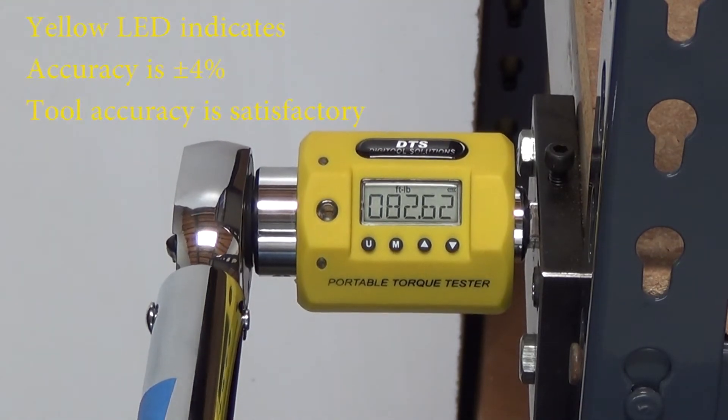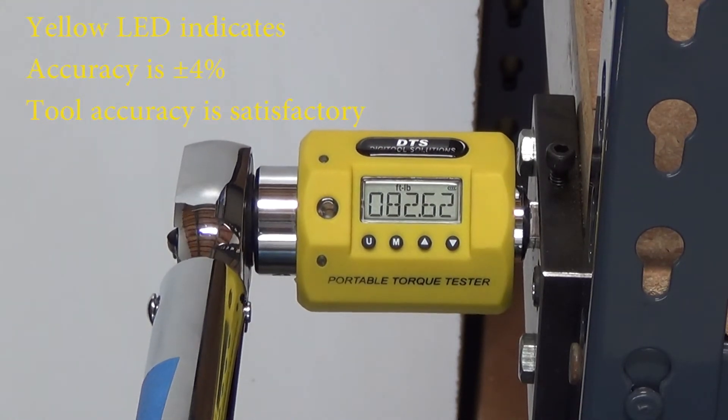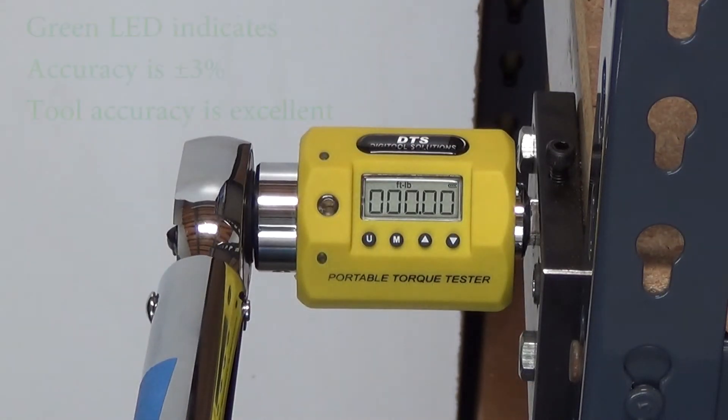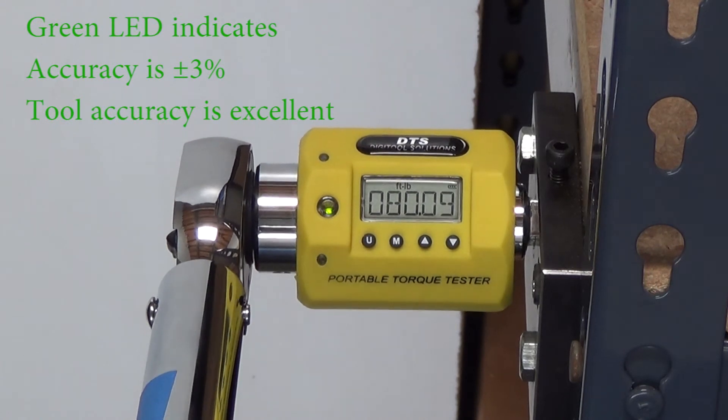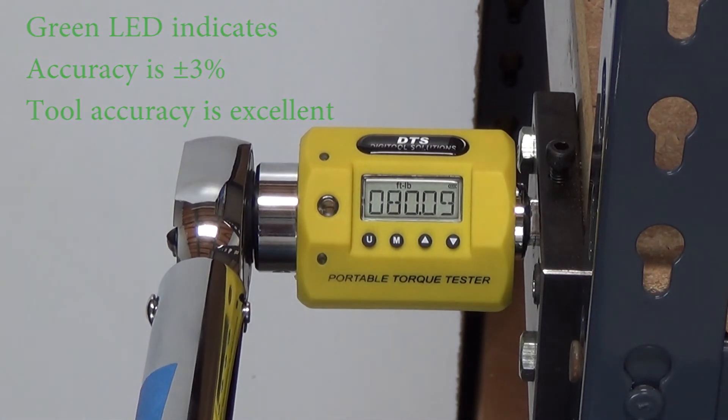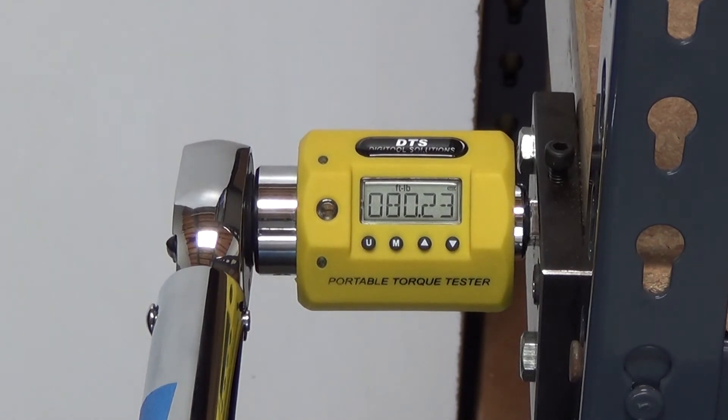The yellow LED indicates that you are plus or minus 4%, which is barely within spec. The green LED indicates plus or minus 3%, which is within spec and good to go. Now you know whether or not your torque tool is qualified for daily use.